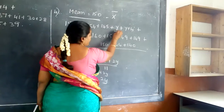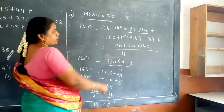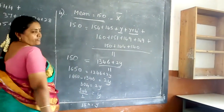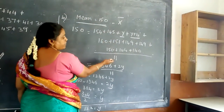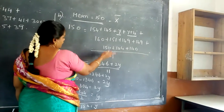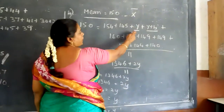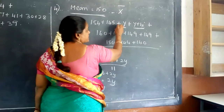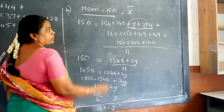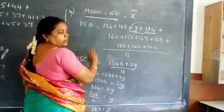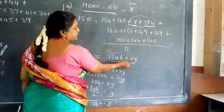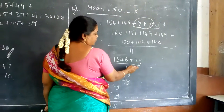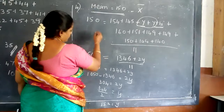In this question we have a new variable — y and y plus 4. Normally we get only numbers, but here we have to find the value of y using the same formula. Adding all the values: y plus y is 2y, and adding the numeric parts gives 1346. So the equation becomes (1346 + 2y) / 11 = 150.